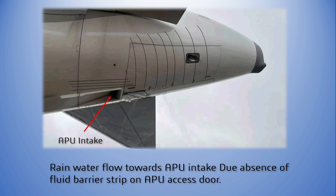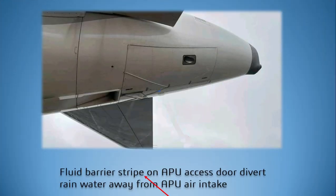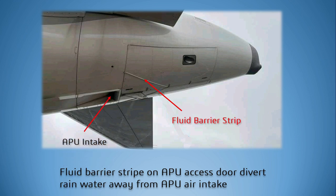This ice formation can clog the APU air intake protection screen and the duct of the cooling fan, which can lead to APU high oil temperature auto-shutdown or APU bleed fault. To prevent the ice buildup in the APU intake, the fluid barrier strip on the APU access door diverts the rainwater away from the APU air intake.